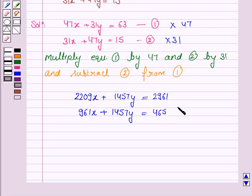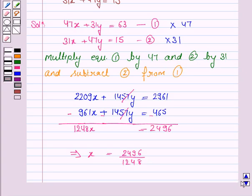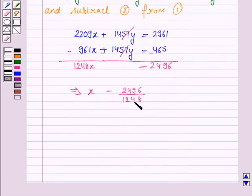Now we have to subtract equation 2 from equation 1. And we know that whenever we subtract, sign changes. Now 2209x minus 961x is equal to 1248x. 1457y gets cancelled with minus 1457y. 2961 minus 465 is 2496. So this implies x is equal to 2496 upon 1248. Now dividing 2496 by 1248 gives us x is equal to 2.